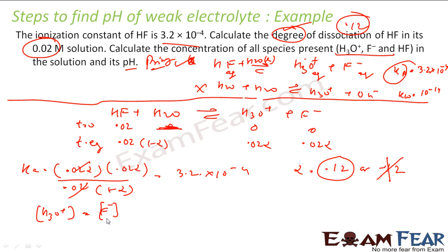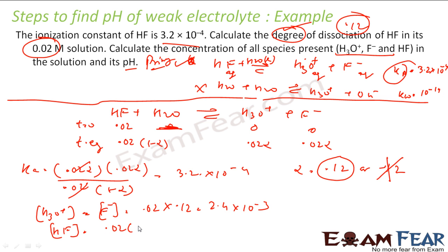The concentration of H₃O⁺ equals the concentration of F⁻ — both will be the same. Both equal C·alpha, which is 0.02 × 0.12. Solving this gives 2.4×10⁻³ M. This part is also done.